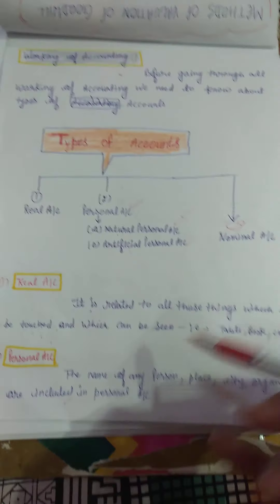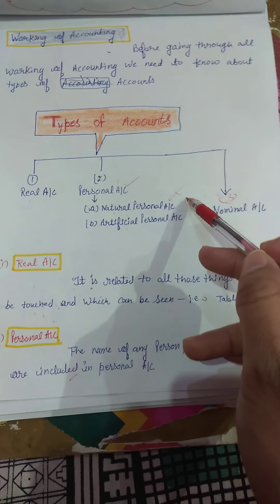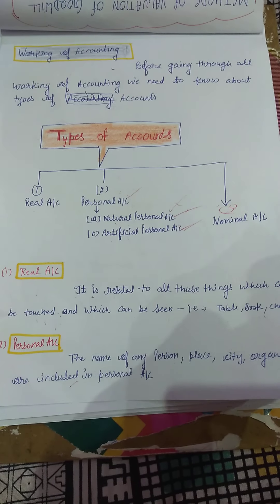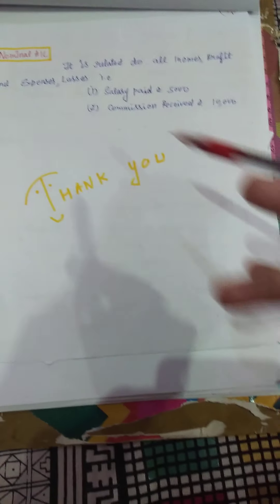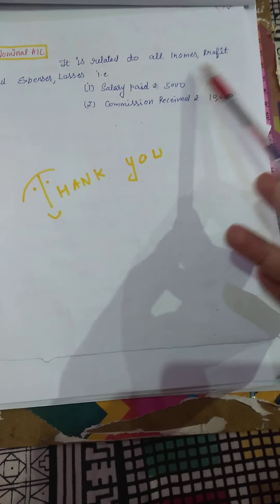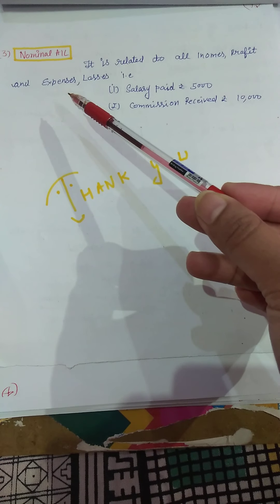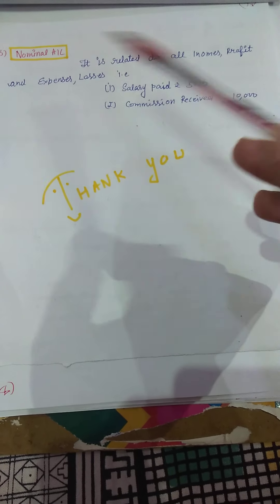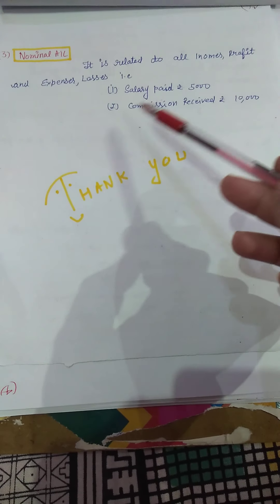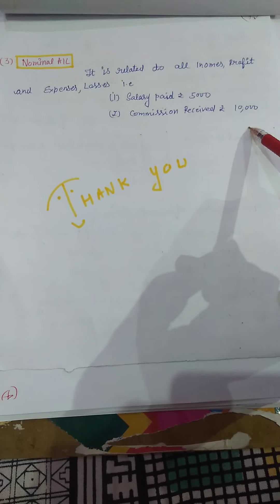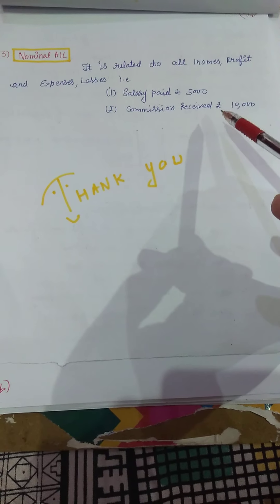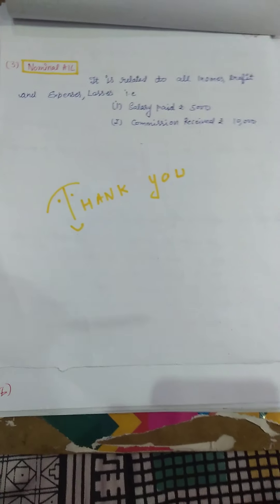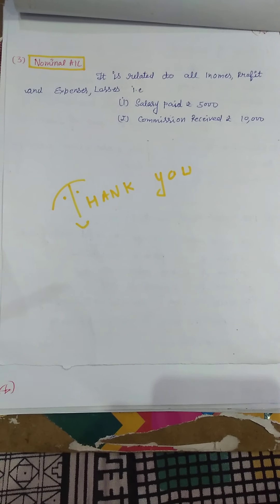Personal account includes the names of any person, place, city, or organization. For example, Mohan, Gohana, Sonipat — these are all examples of personal account. If the name is of a person, then he or she falls under natural personal account. If it is the name of a city, place, or organization, then it would be artificial personal account.